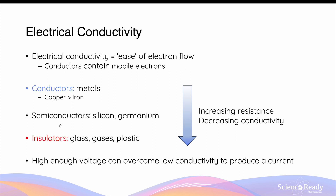It doesn't necessarily mean that a non-conductor cannot conduct current at all. Semiconductors are the next group of materials that can also conduct electricity, mainly consisting of two types made from silicon and germanium. While they do a fairly good job at conducting current, they are not as effective as metals. On the opposite end of the spectrum, insulators have very high electrical resistance and very low conductivity, making it very difficult to move charges through them — common examples include glass, gases, and plastic.